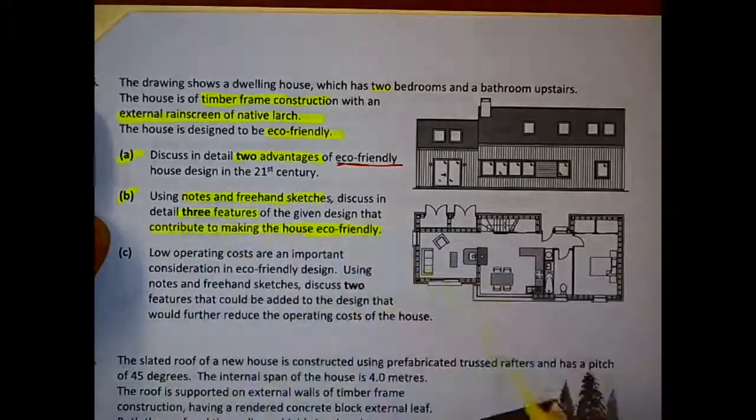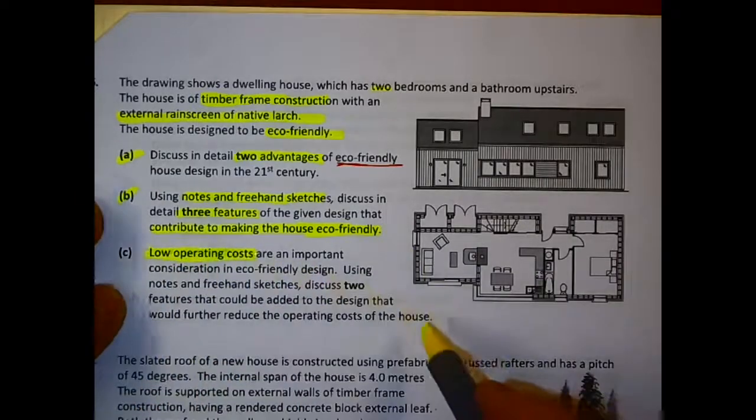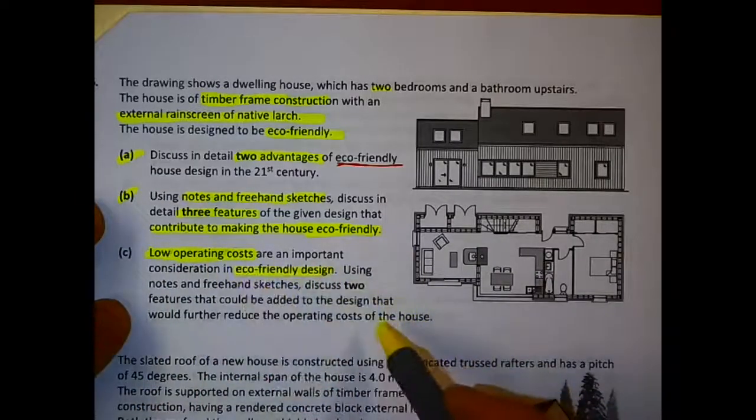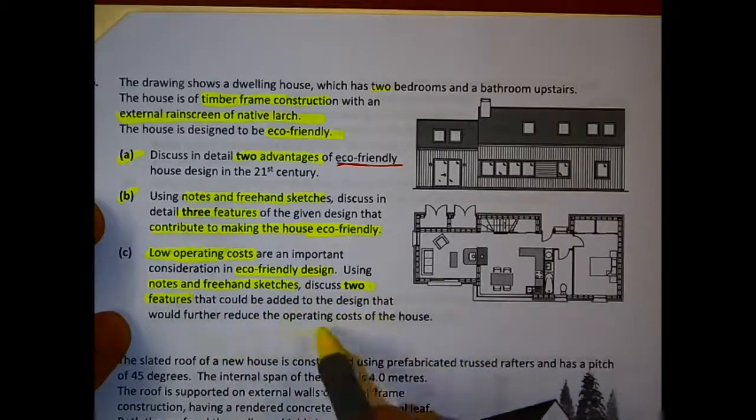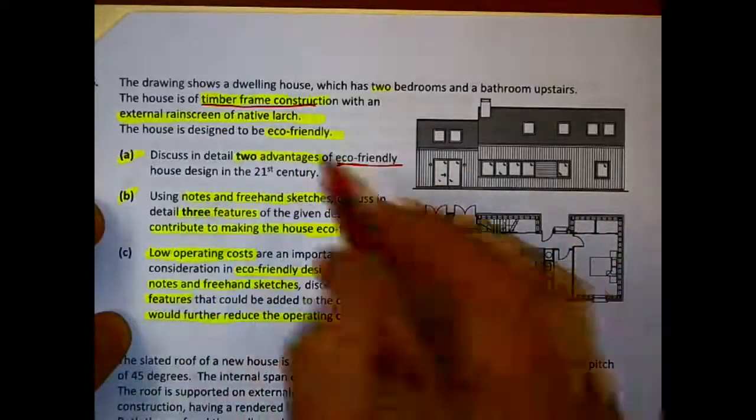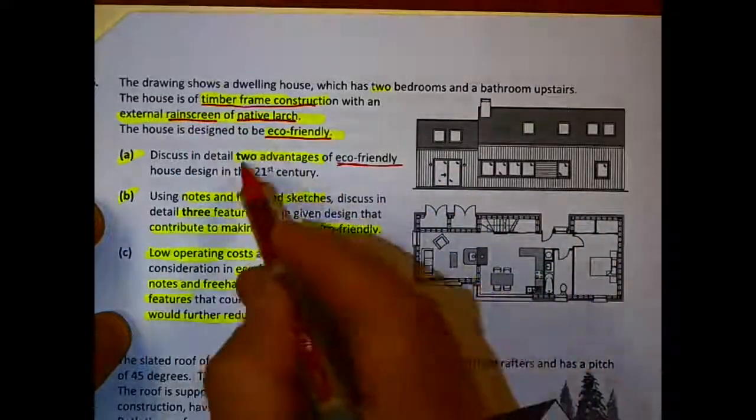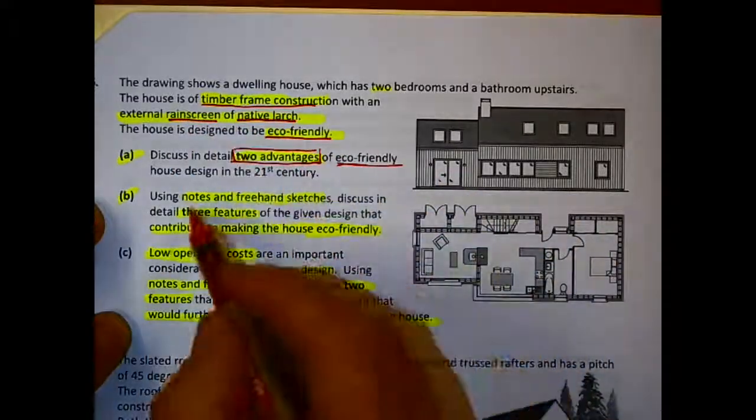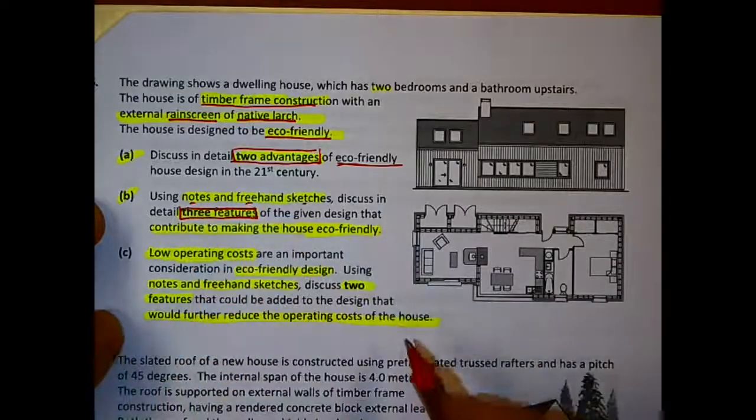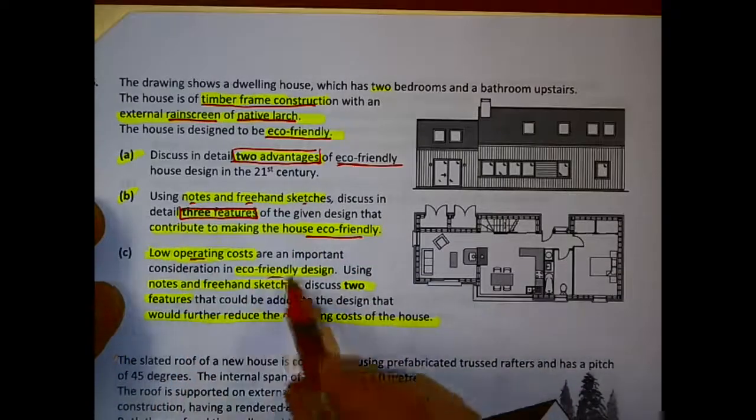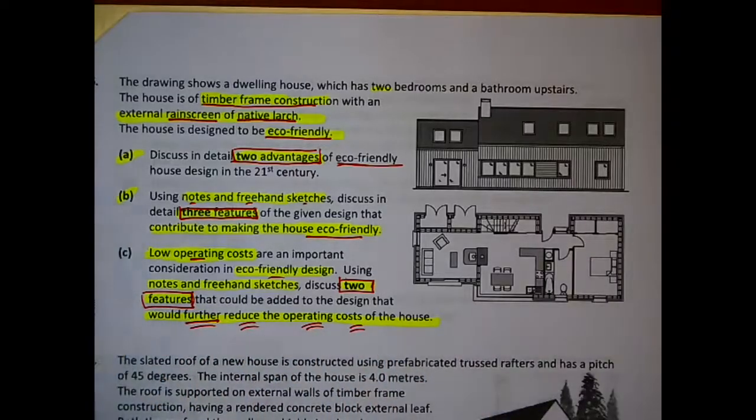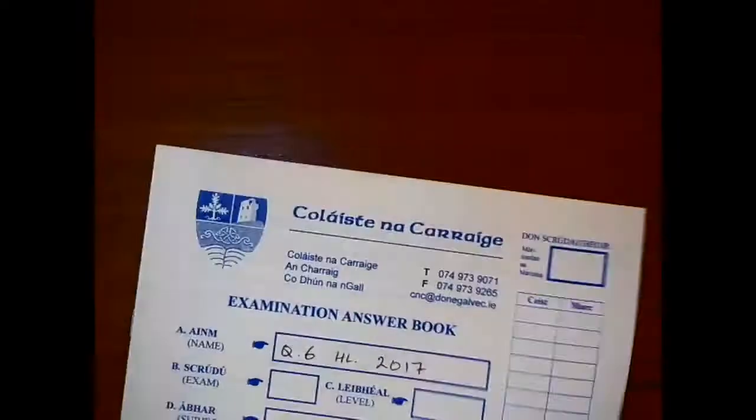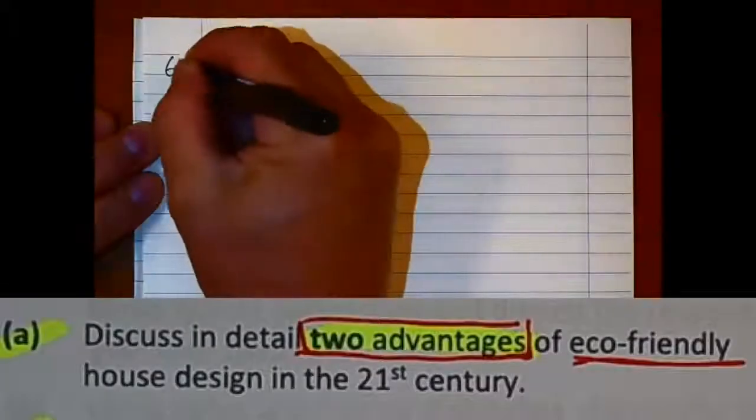Part A is looking for two advantages of this design that make the house eco-friendly. Part B asks for notes and freehand sketches showing three features contributing to the house being eco-friendly. And part C asks for two features that could be added to the design that would further reduce operating costs. I'm highlighting each of these things to make it clear what's been asked for before answering.